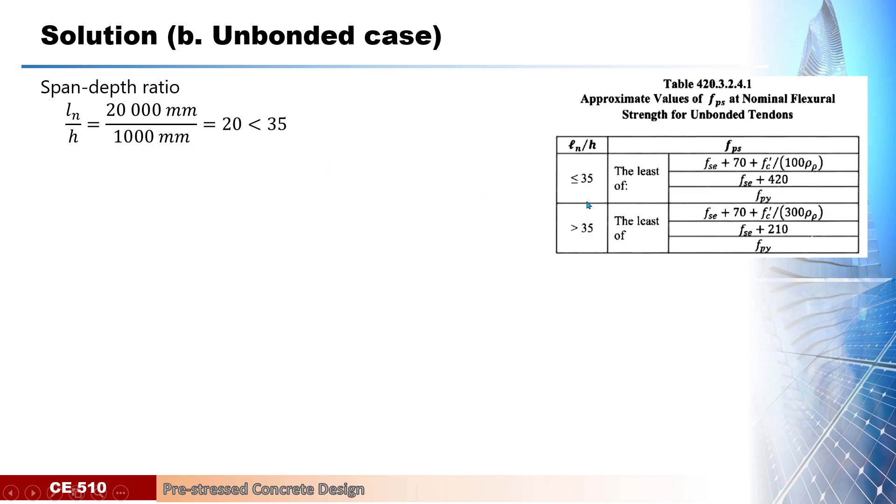This means that for this problem it falls under the first category, so FPS will now be the least of these three values. But before that, we need to determine first the value of FSE and the ρp. We know that FSE will be calculated as the effective force over the area of the pre-stressing tendons.